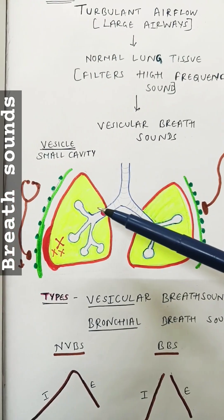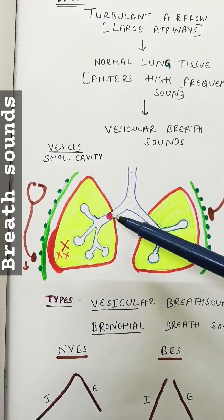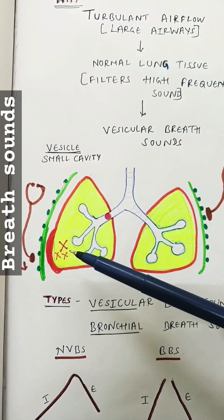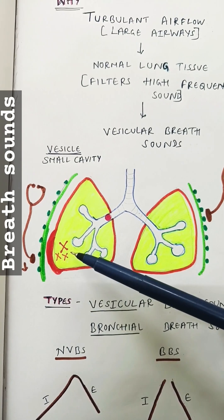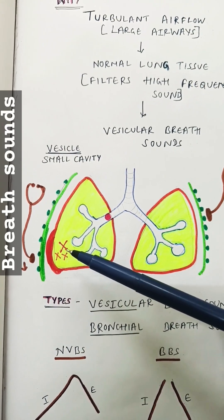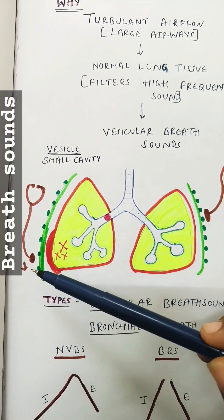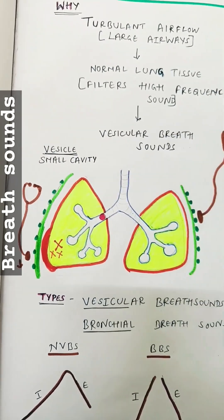The intensity of breath sounds is reduced in bronchial obstruction, emphysema, whenever the lung tissue parenchyma is damaged, or pleural thickening — the intensity is reduced.